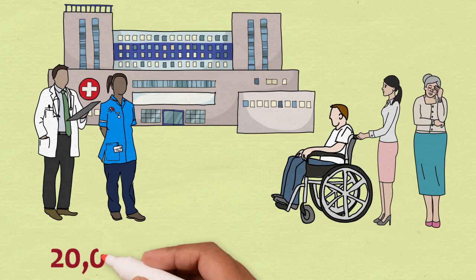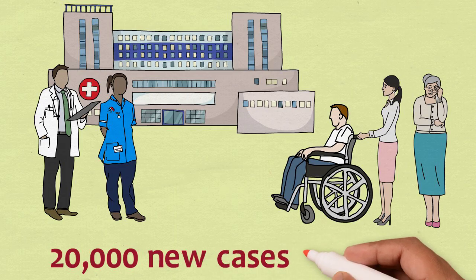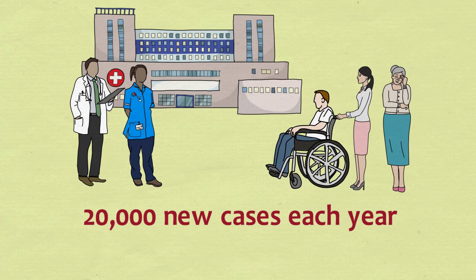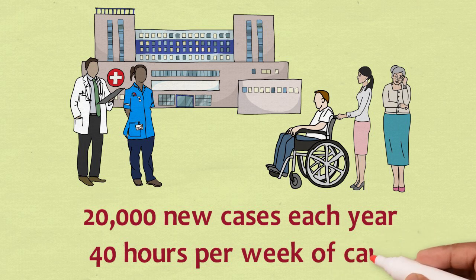Among the elderly, it is estimated that 20,000 new cases of moderate to severe cognitive impairment may emerge due to sepsis. The level of severe cognitive impairment found in these patients is associated with an additional 40 hours per week of care provided by the family, analogous to taking on a full-time job.